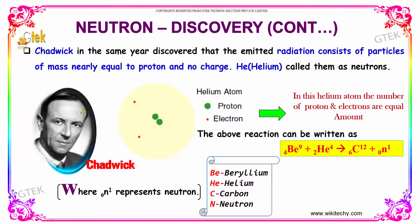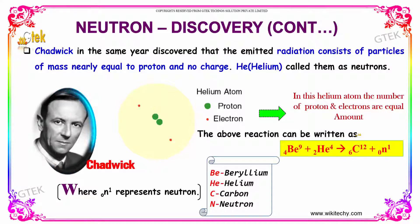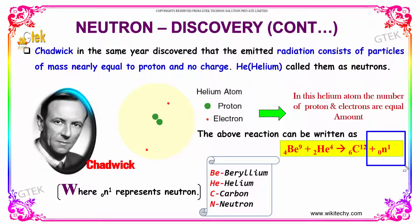Chadwick, in the same year, discovered that the emitted radiation consists of particles of mass nearly equal to protons and with no charge. He called them neutrons. The reaction can be written as beryllium reacting with helium (alpha particle) to give carbon and a neutron. This particle was called a neutron — it doesn't have a charge, but it does have mass.